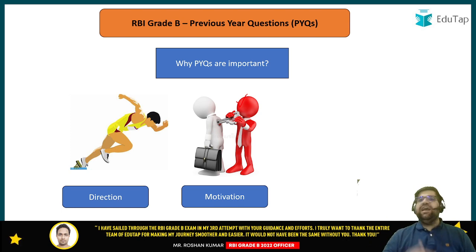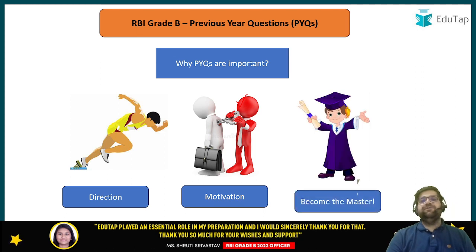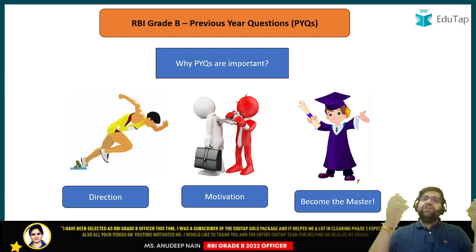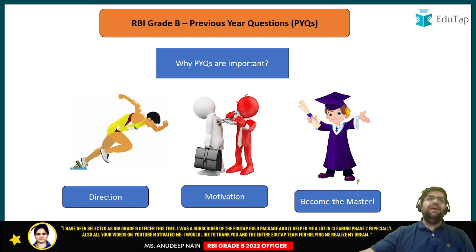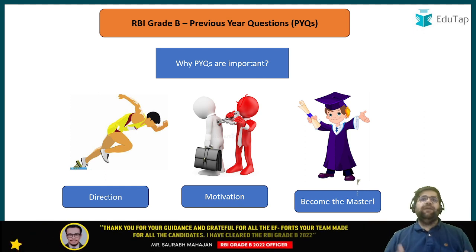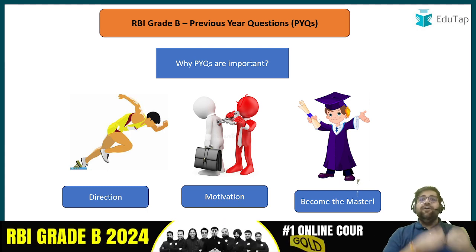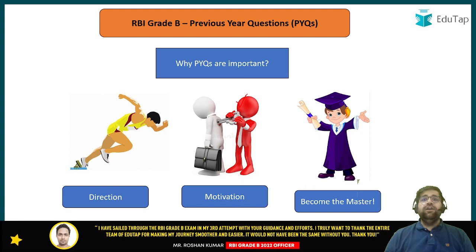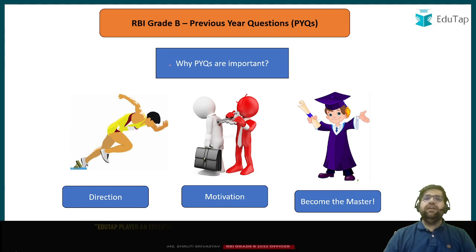You can definitely plan your preparations and become the master of the subject — which is the third point of why previous year questions are important. Once you know that a particular chapter is important, you become the master of it. For example, if I talk about fundamentals of organizational behavior (OB) in management — that chapter is very easy to understand. Once you are able to solve all the questions from that chapter, you will become master of it. Combining all these different reasons, one must definitely refer to previous year questions.